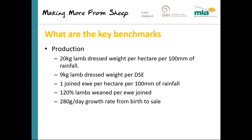120% lambs weaned per ewe joined is required — that's all ewes joined including ewe lambs. 110% won't get you there; 130% or more isn't necessary. And lastly, a growth rate of 280 grams per day from birth to sale. Of all the benchmarks, this is the one we have the most difficulty achieving, and I'll come back to that benchmark towards the end of this presentation.